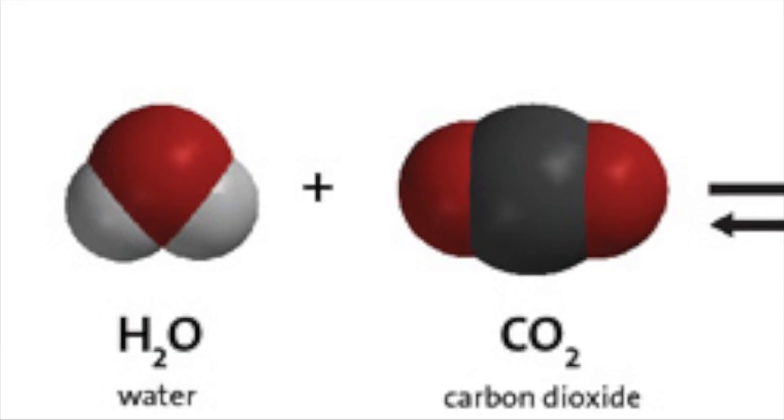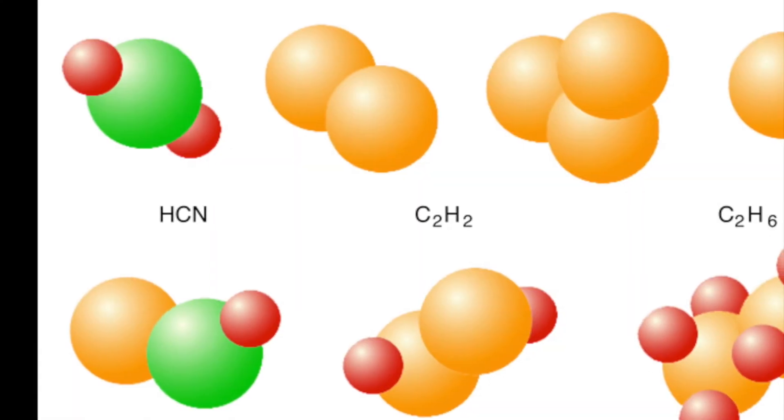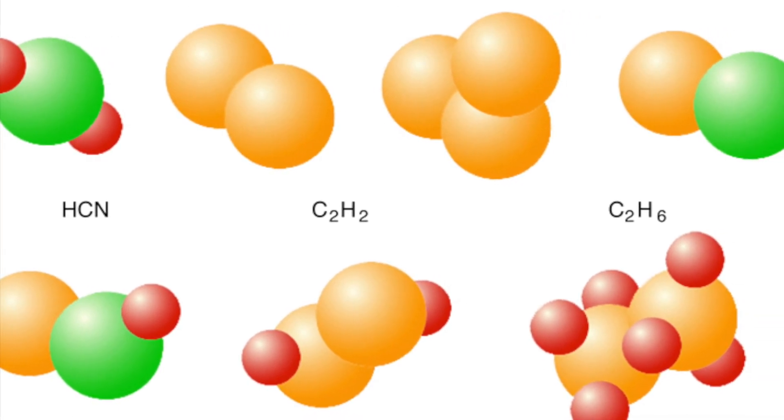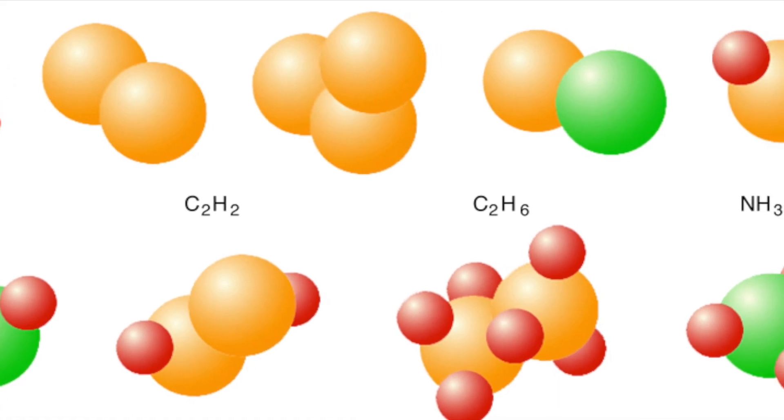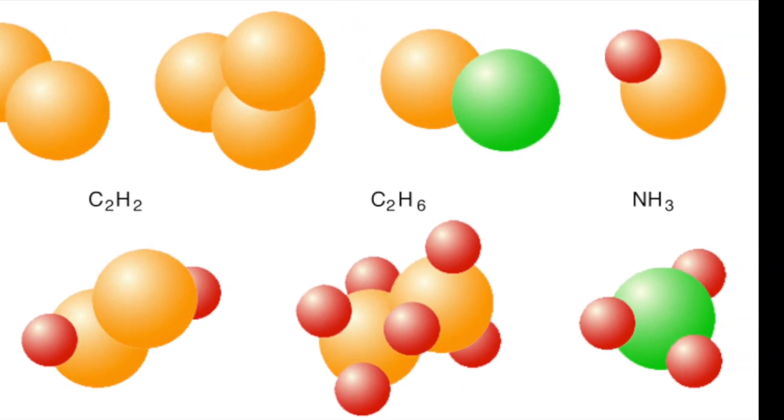Compounds such as carbon dioxide and water form molecules instead of crystals. A molecule is the smallest particle of a compound that still has the compound's properties. It consists of two or more atoms bonded together. You saw models of both carbon dioxide and water earlier in this video.